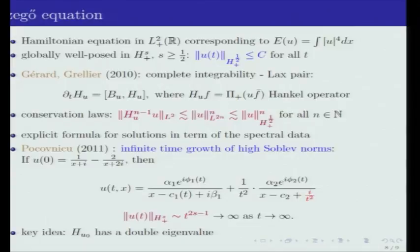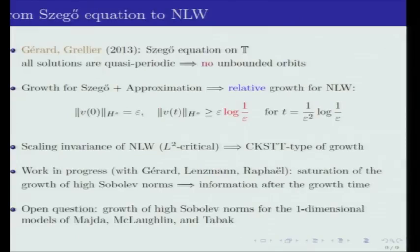Let me make a small parenthesis here and tell you that if, instead of looking at this Szegő equation on the real line, you look at it on the torus, there you have a completely different behavior. There's a recent preprint of Gérard and Grellier in which they prove that on the torus all solutions are quasi-periodic. So in particular, you don't have any unbounded orbits there.